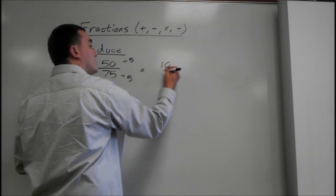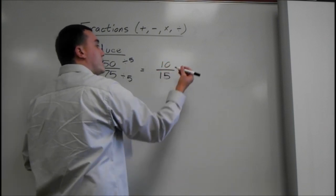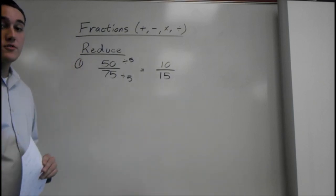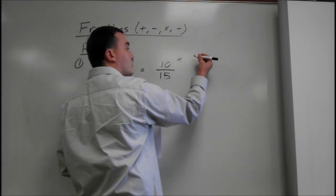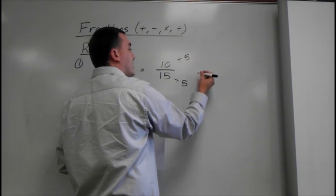50 divided by 5 is 10. 75 divided by 5 is 15. And we know 5 can go into both of those again. So we have to reduce again. Because if you don't reduce it all the way, then it's not done and it won't be right.